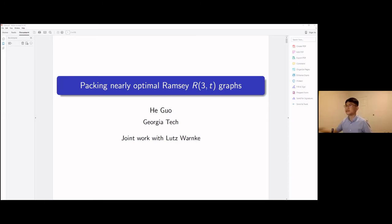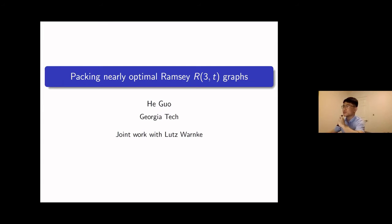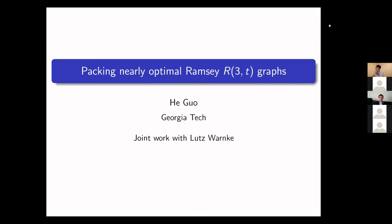Thanks everybody for making it out. Thank you to Hu Guo, our speaker today, who will be talking to us out of Georgia Tech about packing nearly optimal Ramsey R(3,t) graphs. Today I'm going to tell you about constructing triangle-free graphs with pseudo-random properties in dense graphs, where previous results only gave such constructions in complete graphs.